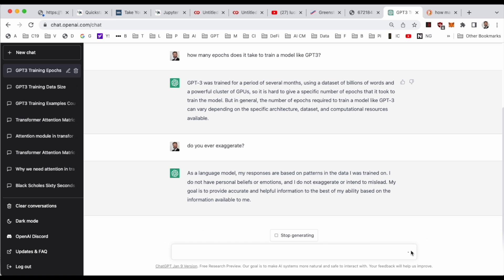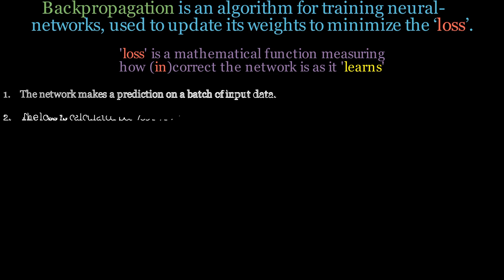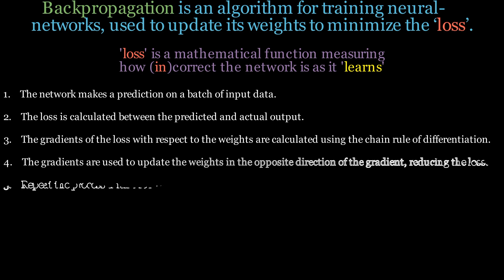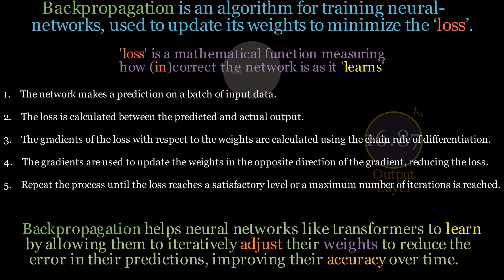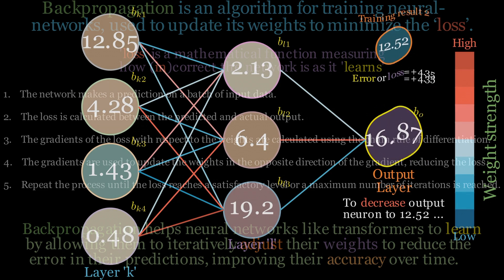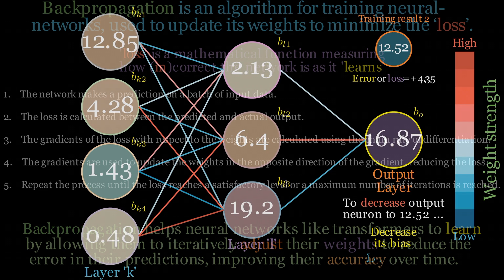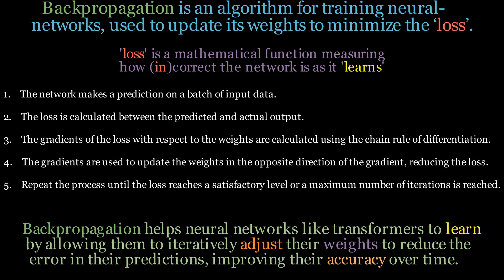The method that GPT-3 uses for updating the weights is backpropagation. In summary, backpropagation is an algorithm for training neural networks used to update its internal weights to minimize a loss. First, the network makes a prediction on a batch of input data. Then the loss is calculated between the predicted and actual output. Third, the gradients of the loss with respect to the weights are calculated using the chain rule of differentiation. Fourth, the gradients are used to update the weights. Finally, this process is repeated until convergence, iteratively adjusting weights to reduce error and improving accuracy over time.